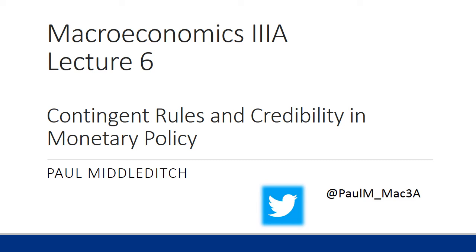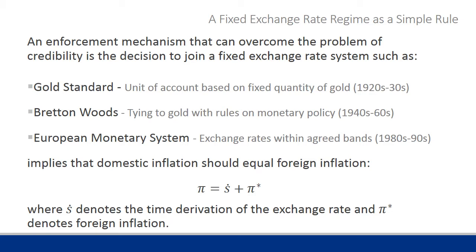This is lecture six: contingent rules and credibility in monetary policy. Last week we looked at discretion and commitment in monetary policy. We noted that commitment gave us an optimal inflation rate of zero, compared to the case of discretion which was k over lambda. We noted that k over lambda was the inflation bias of choosing discretion over commitment. However, the problem with commitment is that it is not necessarily credible, so we need some enforcement mechanism that can give the authority credibility.